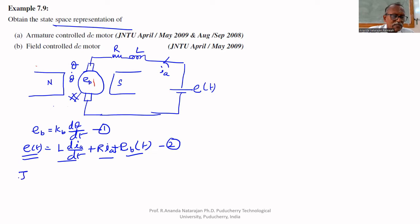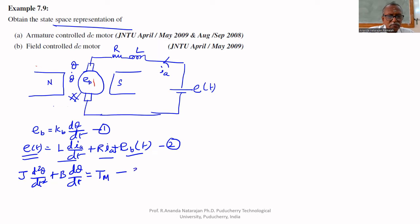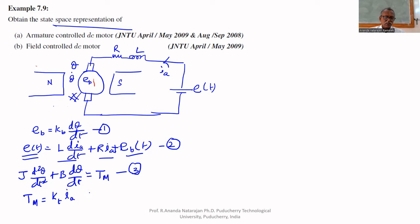The third equation is the mechanical equation: J times d²(theta)/dt² plus B times d(theta)/dt equals T_m. The relation between the electrical and mechanical equations is that mechanical torque equals K_T times I_A. These are the four equations for the armature controlled DC motor, and we have to put them into the state space model.